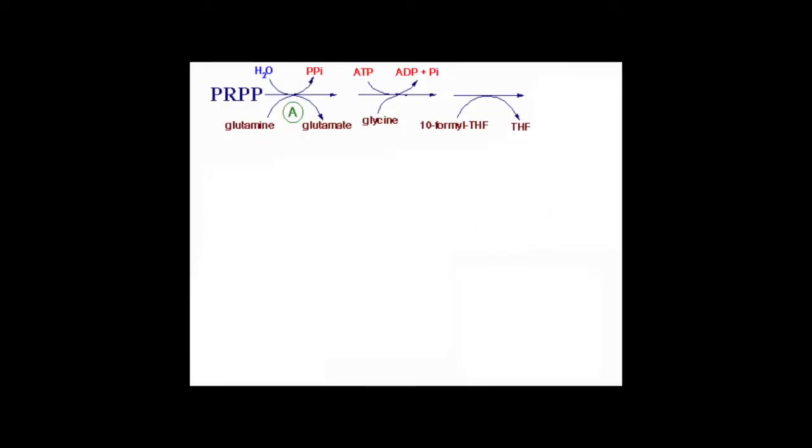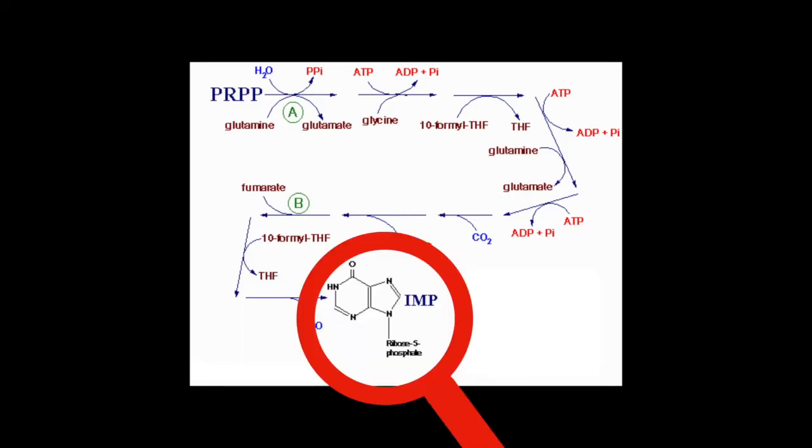PRPP goes through a series of steps that fortunately we don't need to get into detail for, where it finally ends up as IMP or inosine monophosphate.